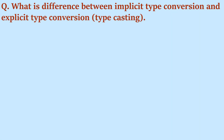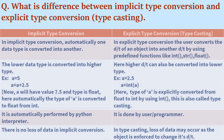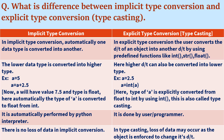The next question is: what is the difference between implicit type conversion and explicit type conversion (type casting)? Implicit type conversion is automatic — one data type is automatically converted into another. Whereas in explicit type conversion, the user has to use a function to convert one data type into another. The basic type conversion functions are int(), str(), and float().